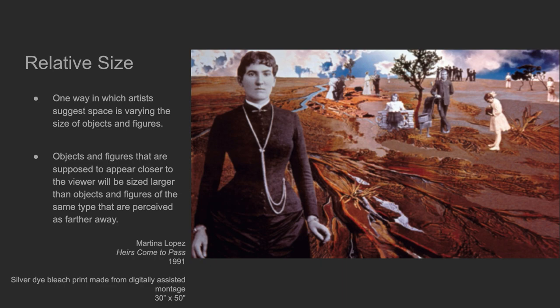Relative size: one way in which artists suggest space is by varying the size of objects and figures. Objects and figures supposed to appear closer to the viewer will be sized larger than objects of the same type perceived as farther away. We have a silhouette of a person here, very large compared to these people — the people get smaller the farther they are away. Because of relative size, we know that people who appear bigger are closer to us.